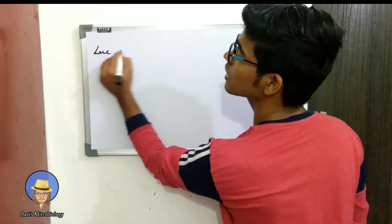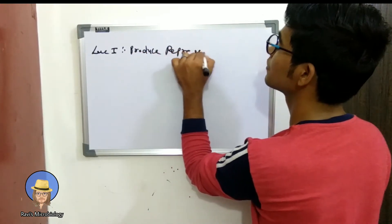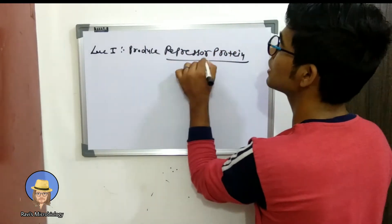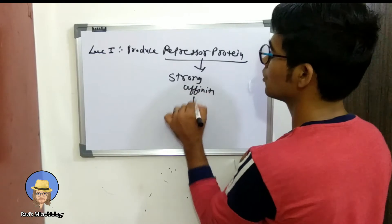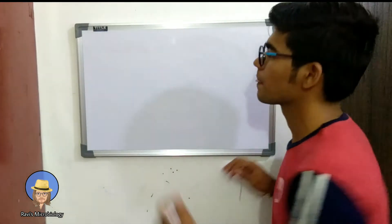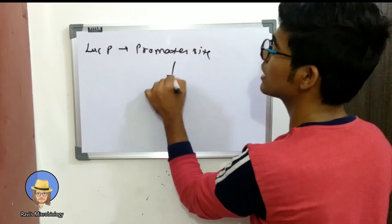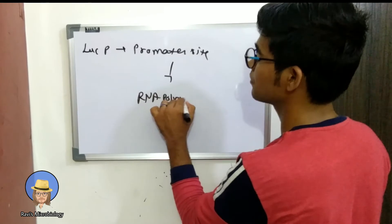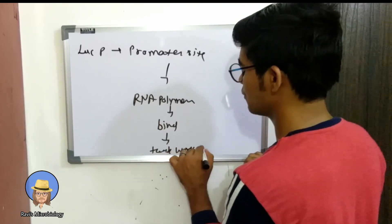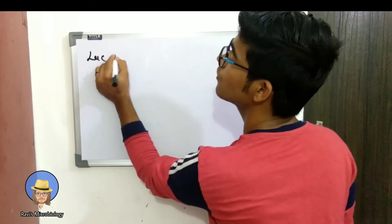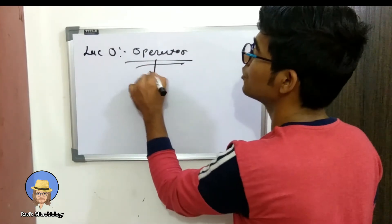The function of lac I is to produce repressor protein. This protein has strong affinity towards lac O operator site. The function of lac P is a promoter site. The function of lac O is an operator site. It is the main functional site due to its high affinity towards repressor protein.